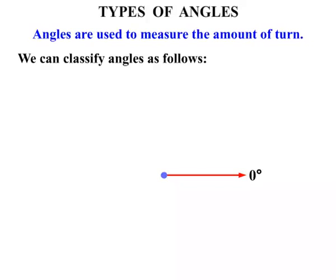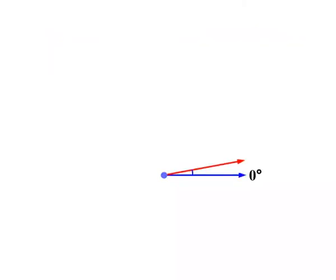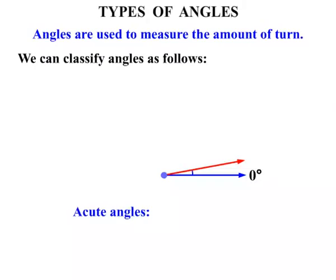Now we're trying to classify the angles. We can classify them as follows. If we start turning that red arm we have created an angle, and that angle is an acute angle. Acute angles are between zero degrees and 90 degrees.